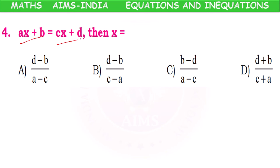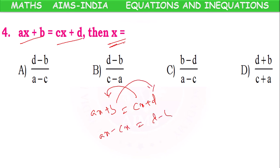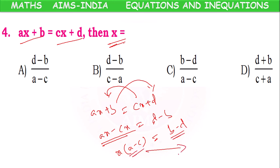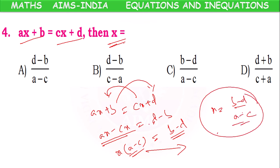Number four: AX + B = CX + D, then X equals how much? Take all X terms to one side: CX comes to LHS, giving AX − CX. B goes to RHS, giving D − B. On LHS, take X as common, leaving (A − C). On RHS, D − B remains. Then (A − C) goes to RHS: X = (D − B) / (A − C), which simplifies to X = (B − D) / (A − C). According to the options, option A is the correct answer.